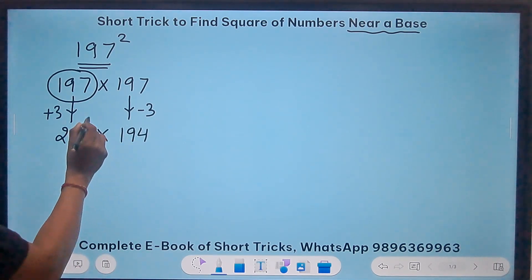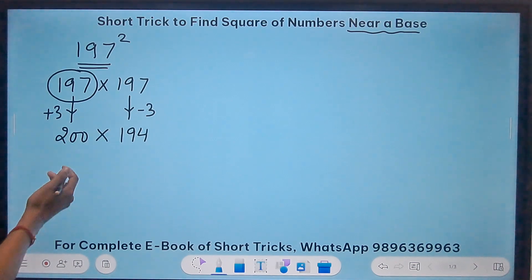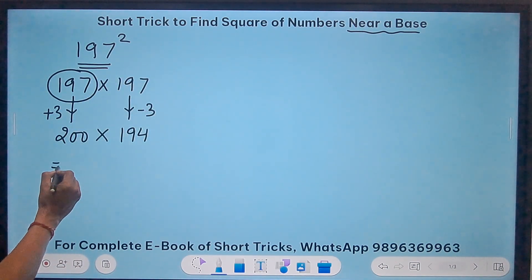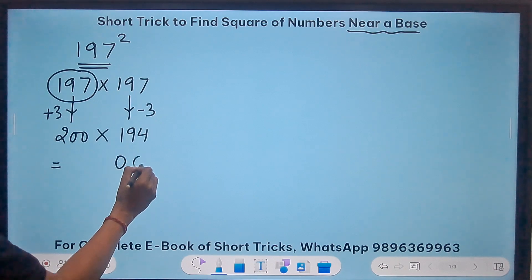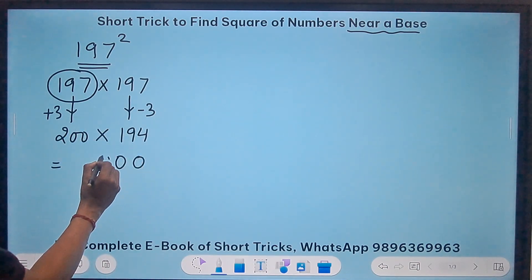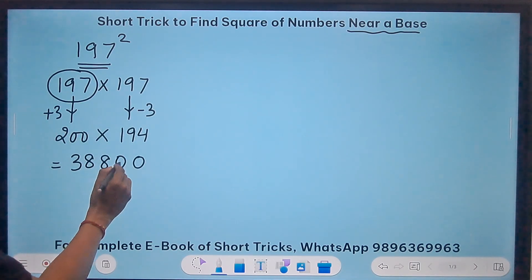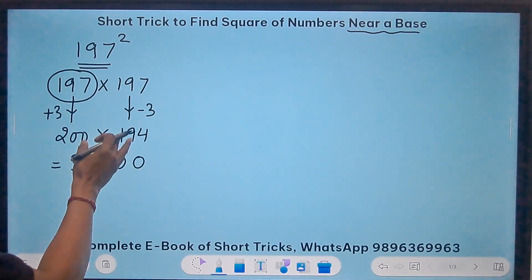Now multiplying 197 and 197 is tricky, but multiplying 200 and 194 is easy. Why? Because we have two zeros here and 2 times 4 is 8, 2 times 9 is 18. So 8 and a 1 carry. 2 times 1 is 2 plus 1, 3. So 38,800. Is that the answer? Not at all. We have one more step coming up.